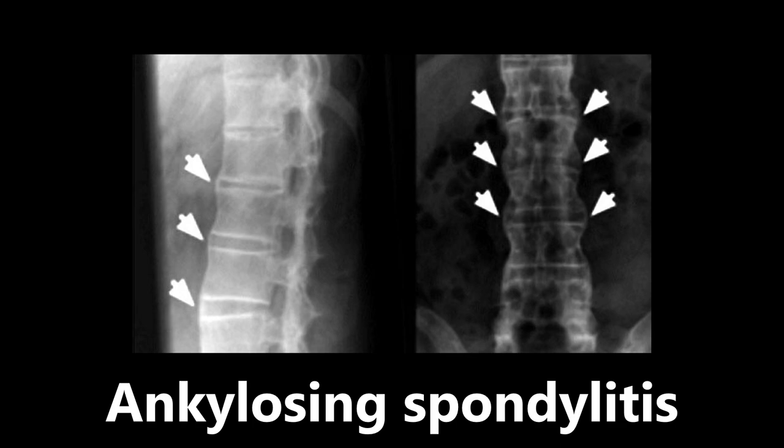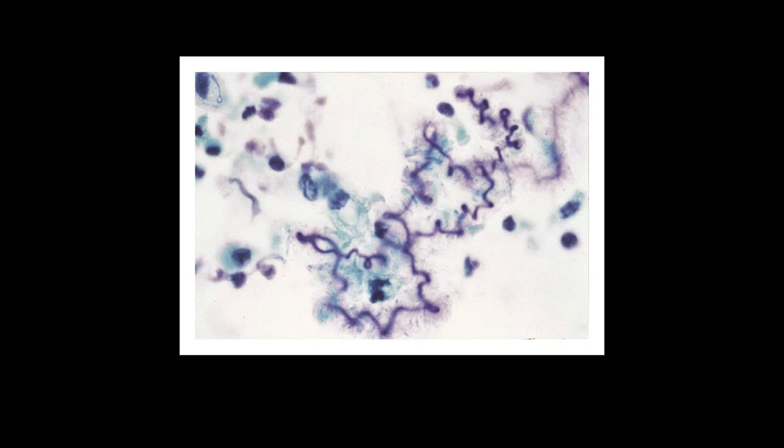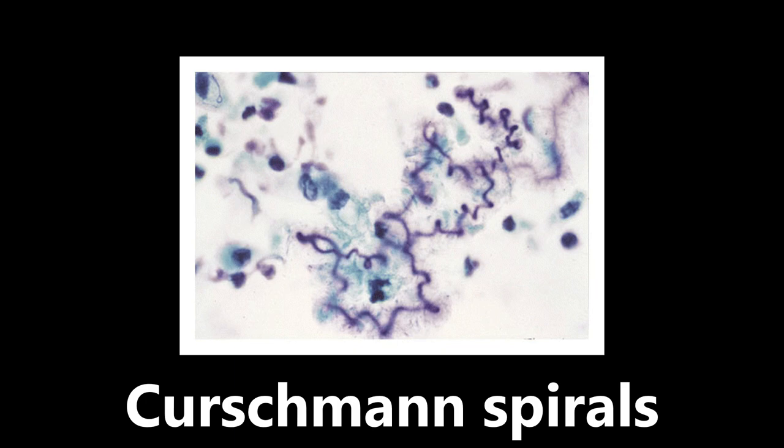This next image shows this corkscrew spiral thing right in the center — this is an example of Curschmann spirals. These are spiral-shaped mucus plugs seen in the sputum of patients with asthma or other lung diseases. So if you see something like this, think Curschmann spirals and think asthma or another respiratory disease.